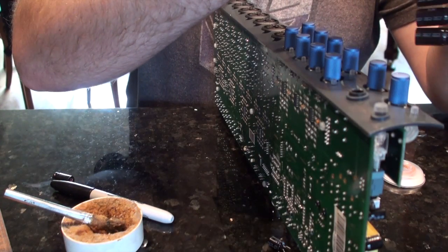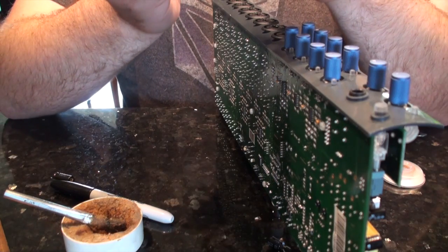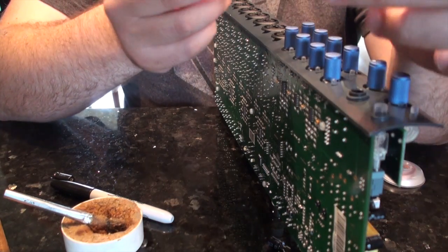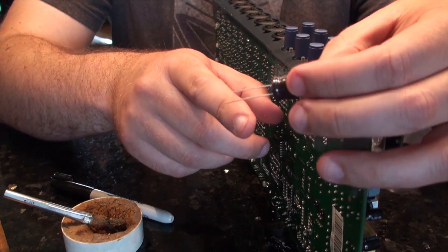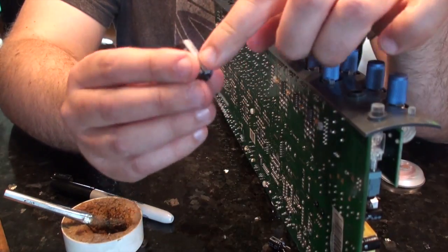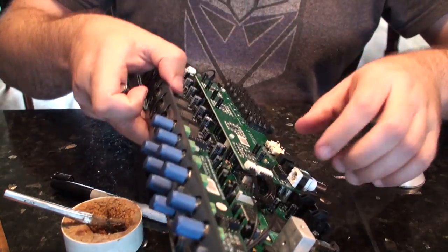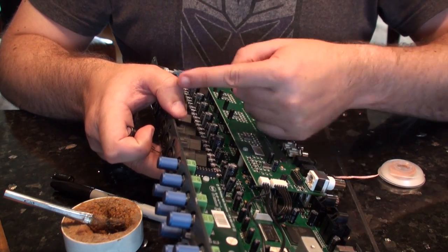Alright, let's see if we can make one of these guys work. It's also good to make sure that you know what is your positive and negative. They always have these white stripes on here, so we'll just match it up with the white stripes facing towards the front.